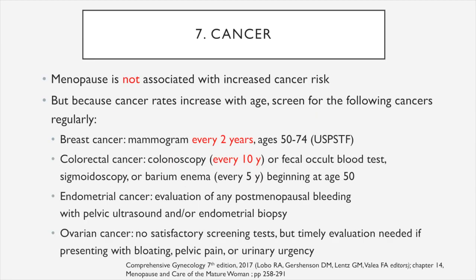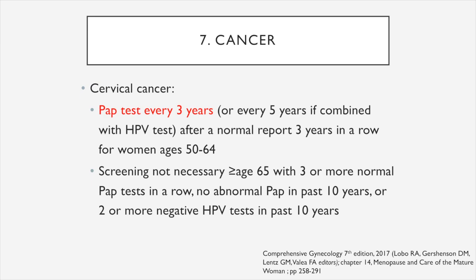What is the role of menopause in the development of cancer? Menopause per se is not associated with increased cancer risk, but because cancer rates increase with age, we recommend regular screening. For breast cancer, we recommend mammogram every 2 years starting at age 50. For colorectal cancer, colonoscopy every 10 years, or fecal occult blood test, sigmoidoscopy, or barium enema every 5 years, beginning age 50. For endometrial cancer, evaluate any postmenopausal bleeding with pelvic ultrasound or endometrial biopsy. For ovarian cancer, there is no satisfactory screening test, but timely evaluation is needed if the patient presents with bloating, pelvic pain, or urinary urgency. For cervical cancer, Pap test every 3 years, or every 5 years if combined with HPV test. Screening is not necessary for patients 65 and older with 3 or more normal Pap tests in a row, no abnormal Pap tests in the past 10 years, or 2 or more negative HPV tests in the past 10 years.